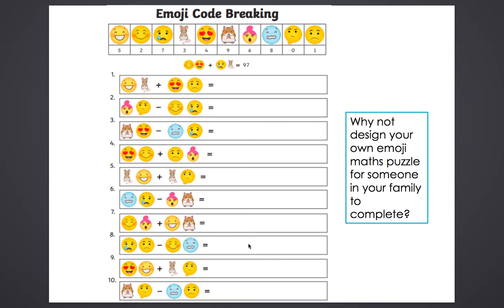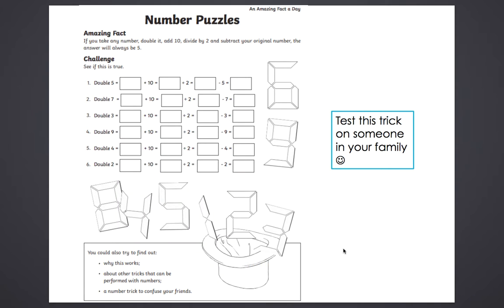Then we've got another addition puzzle — a special number trick. If you take a number, double it, add 10, divide by 2, and then subtract the number you started with, the answer will always be 5. Test it with the numbers provided to check it's true, then try it on somebody in your family. Ask them to think of a number, double it, add 10, divide by 2, and take away the number they started with — the answer will be 5, and you can amaze them with that trick.